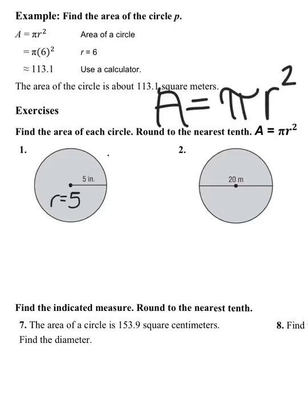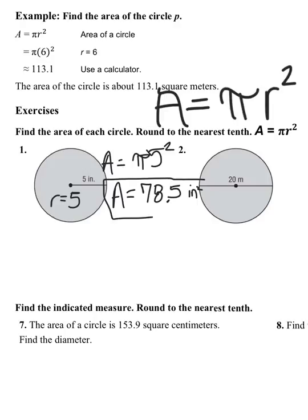When I plug it in, my area equals pi times 5 squared. Rounded to the nearest tenth, I get area equals 78.5 inches squared. That's pretty basic, just plug it in.